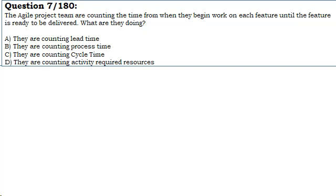A. They are counting lead time. B. They are counting process time. C. They are counting cycle time. D. They are counting activity required resources.